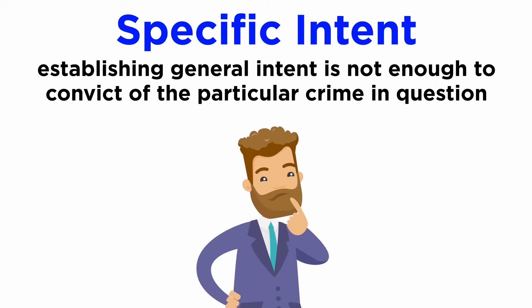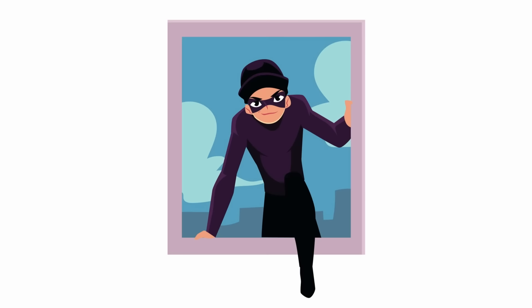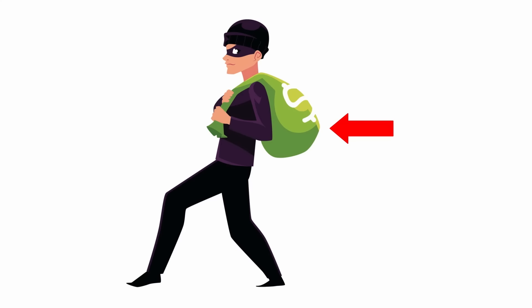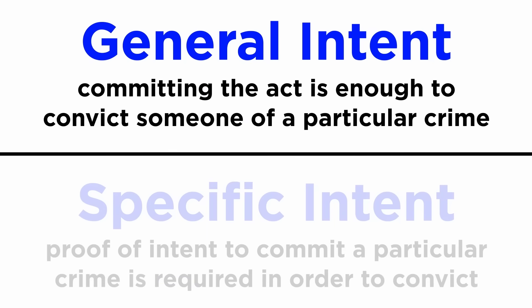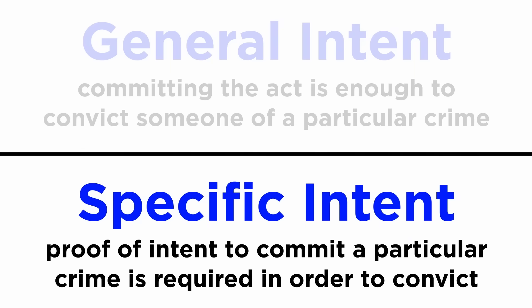On the other hand, in specific intent crimes, merely establishing the general intent is not enough. Burglary is a crime that involves illegal entry into a home to commit a crime, especially theft. Here, merely breaking into the house is general intent and is not enough to constitute a crime. The specific crime committed after breaking in is what constitutes specific intent. To summarize, general intent is when committing the act is enough, while specific intent is when specific proof is needed.